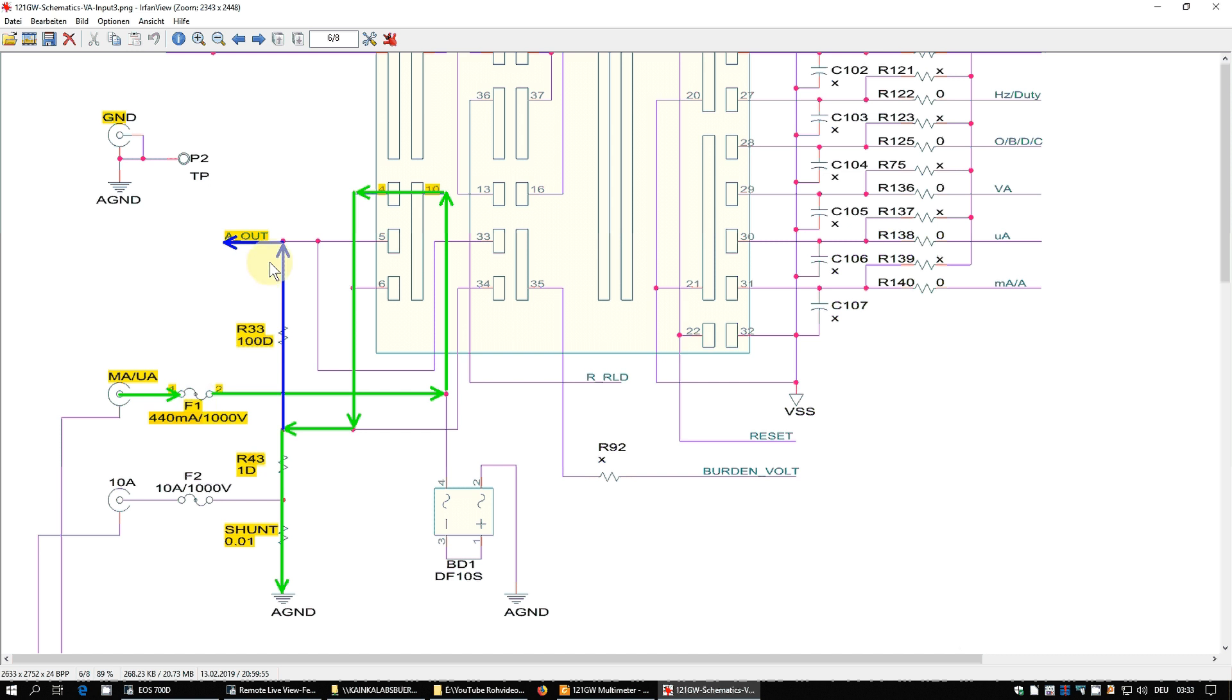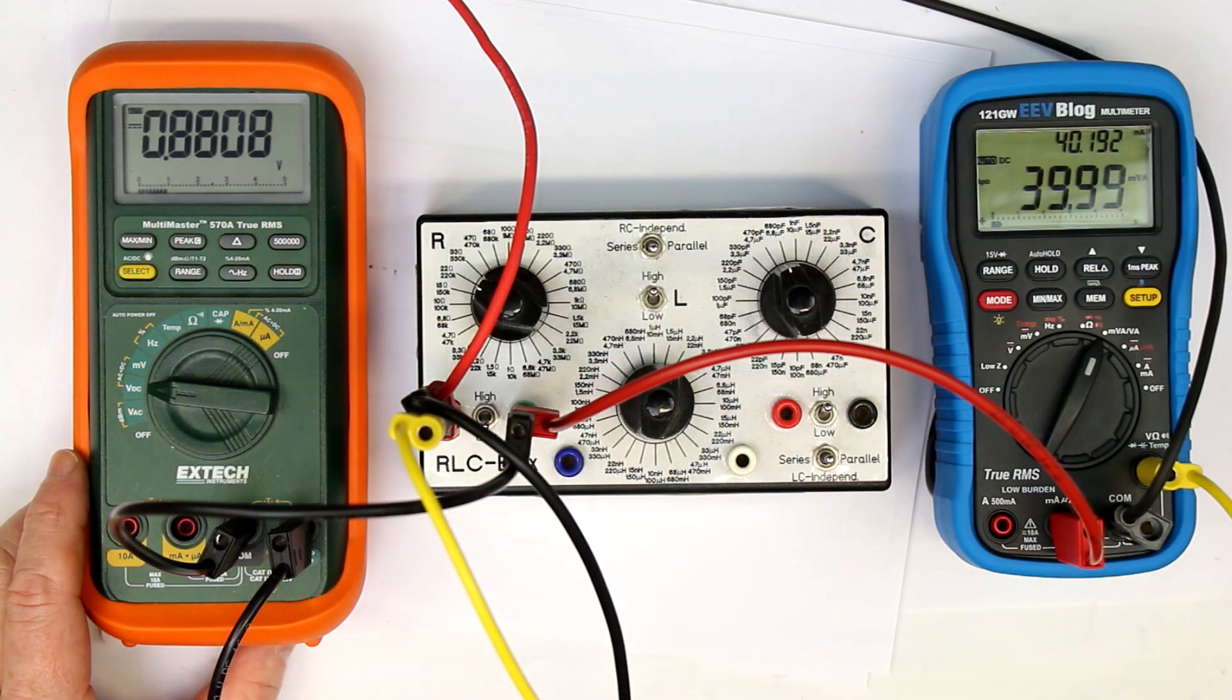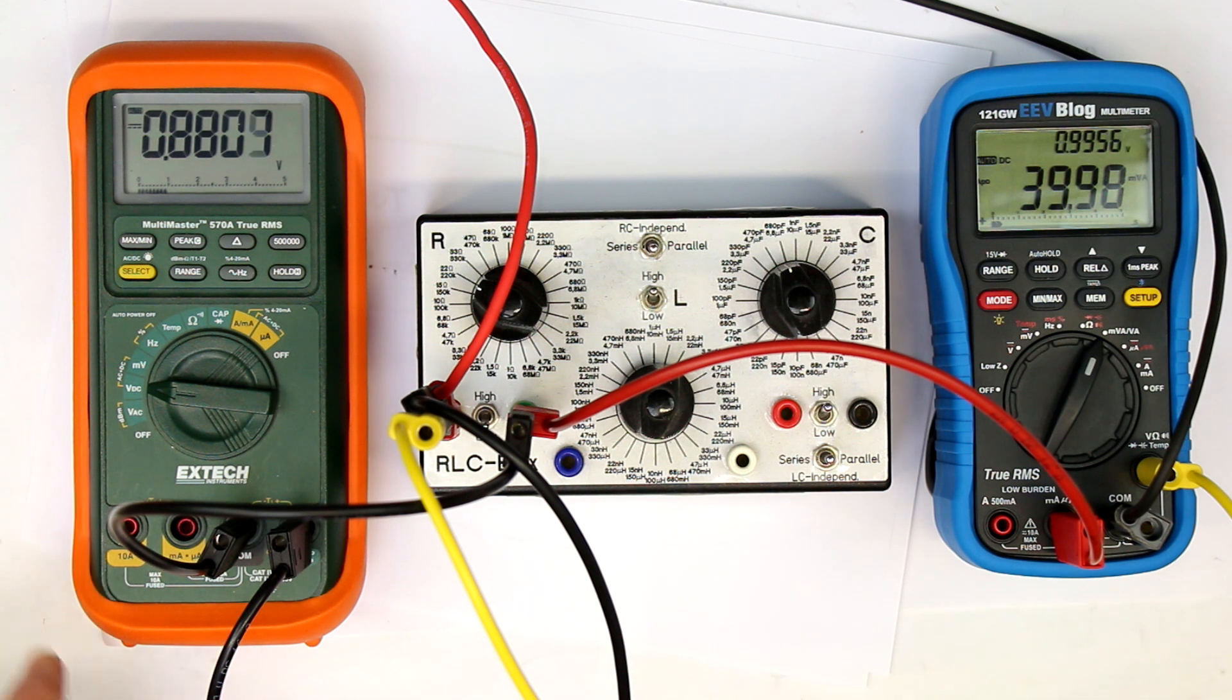Next we'll make an experiment to demonstrate that the error introduced by the burden voltage in VA mode can be much larger than the 1% given accuracy of the VA mode.